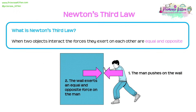Newton's Third Law states that when two objects interact, the forces they exert on each other are equal in magnitude and opposite in direction. For example, a man pushing on a wall exerts a force on the wall, and the wall exerts an equal and opposite force back on the man — that is Newton's Third Law.